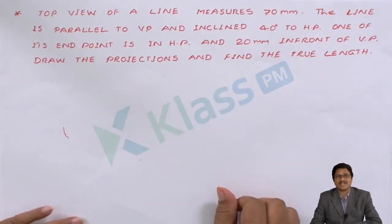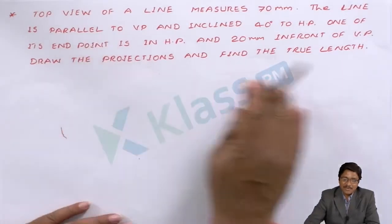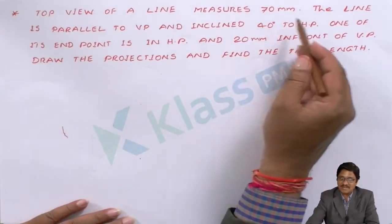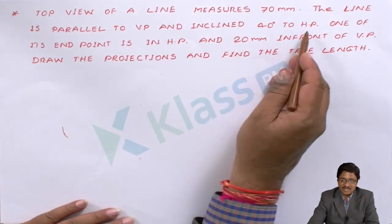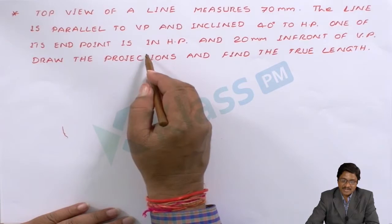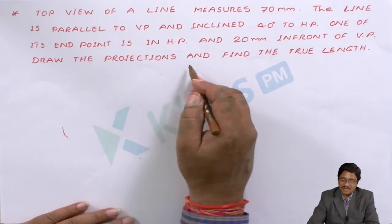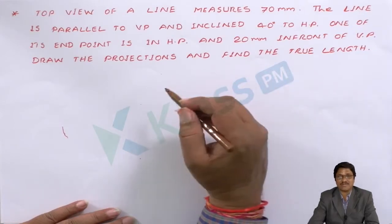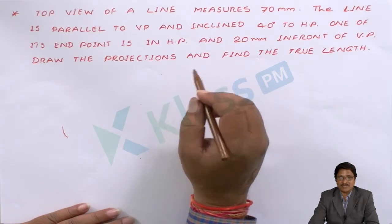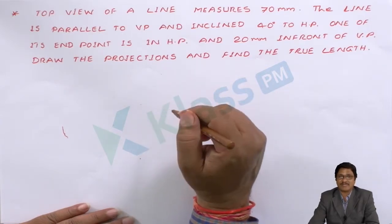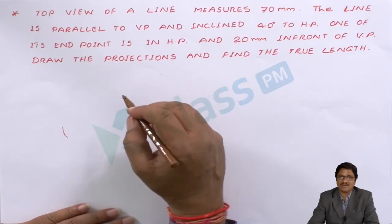Let me discuss a different problem with the same principle we learned earlier. If you carefully read the problem and first try to understand what is being asked, then you have to correlate whatever length conditions are given. Then you can easily find the solution.